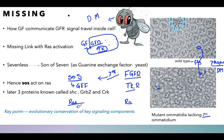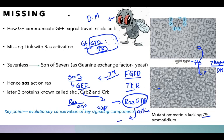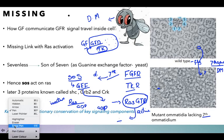RAS generally binds with GDP. The guanine exchange factor is required to remove this GDP and trigger RAS to bind with a GTP complex. This GTP-bound RAS is the active form, which further triggers downstream signaling for division and proliferation. From Drosophila melanogaster we learned that deletion of the seventh gene fails to bind with the downstream component Son of Sevenless, whose structure has homology with the guanine exchange factor — converting inactive RAS to active RAS.